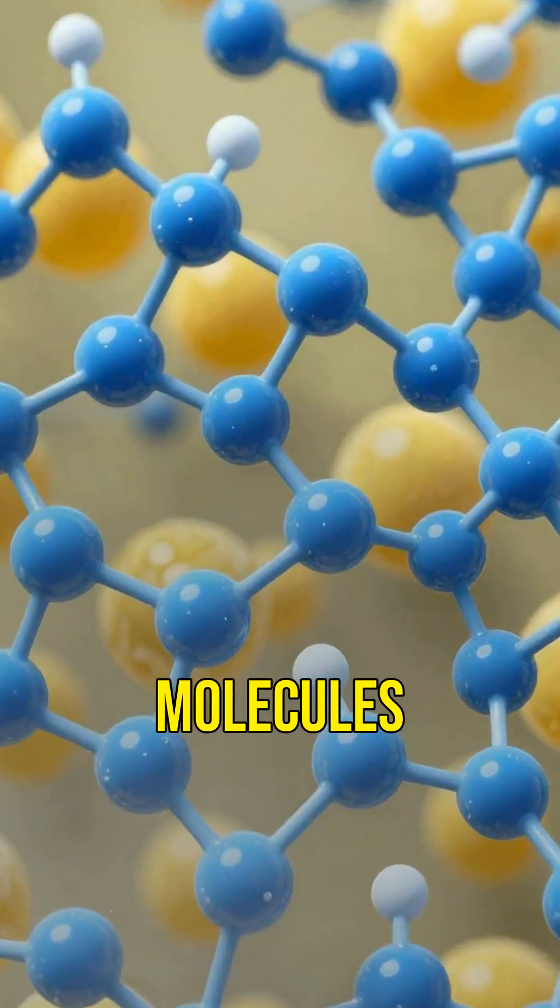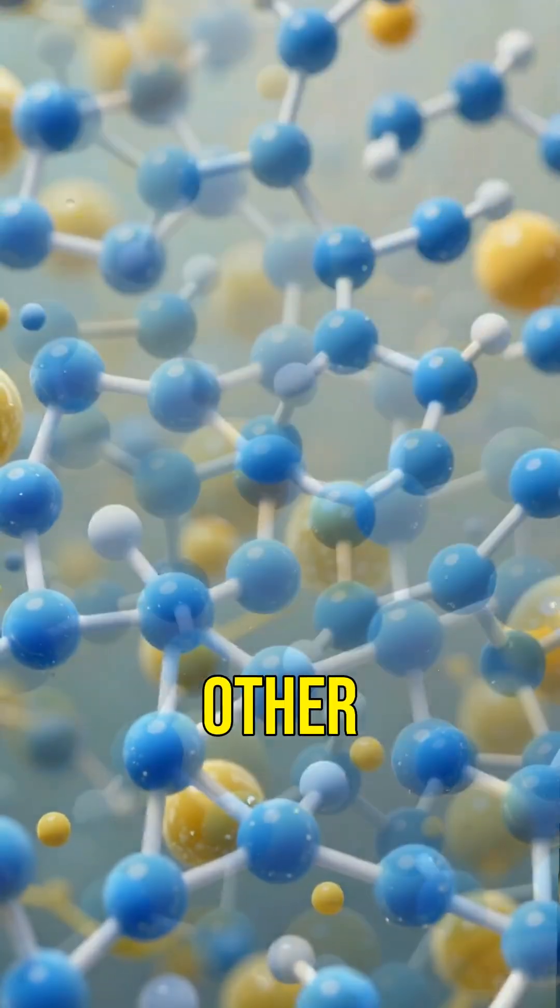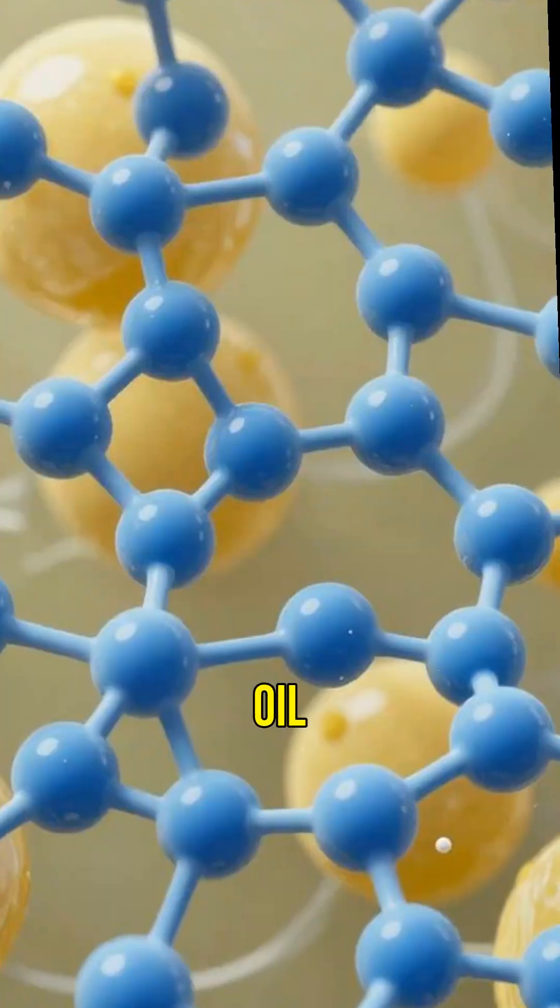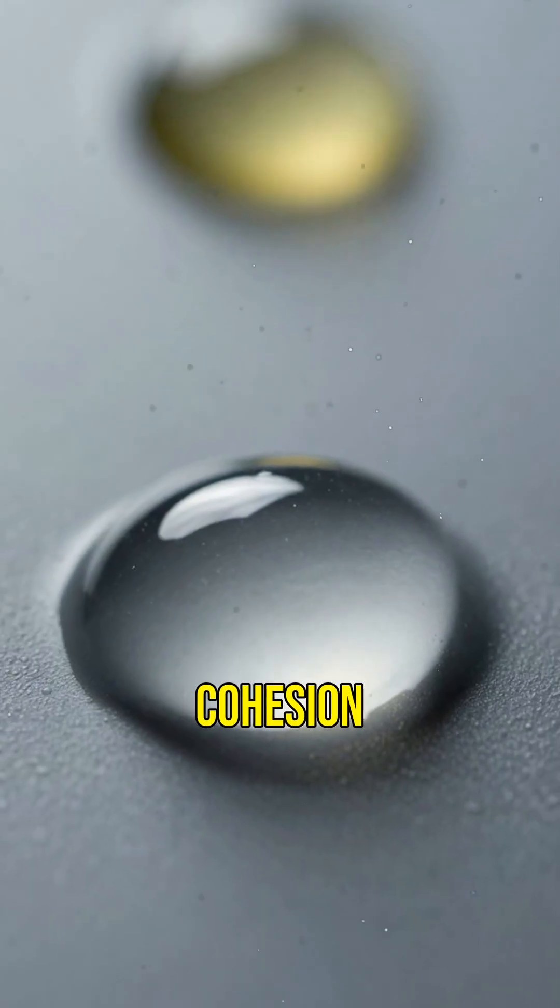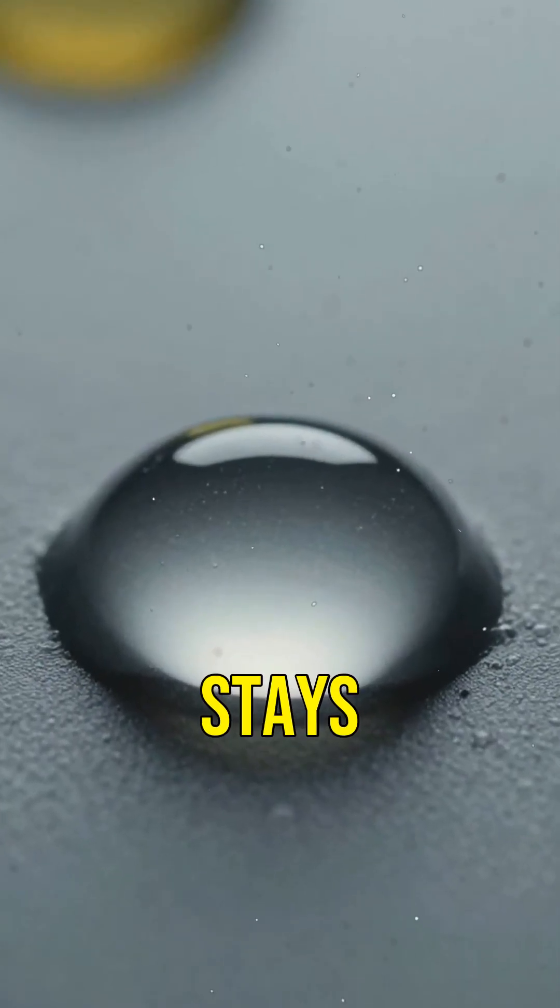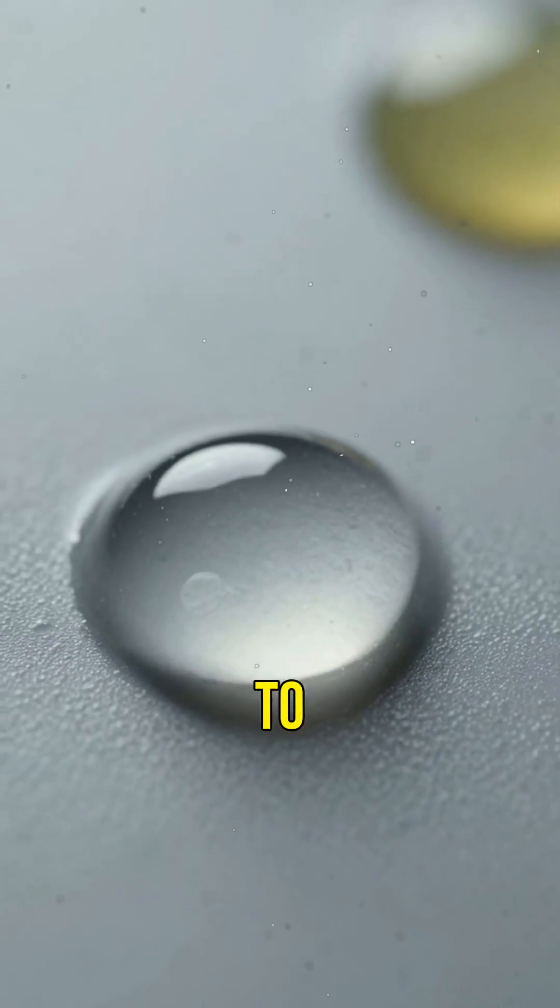But there's more. Water molecules are super attracted to each other, creating a tight network that oil just can't break into. This strong bond between water molecules is called cohesion, and it's a big reason why oil stays on the surface, refusing to blend in.